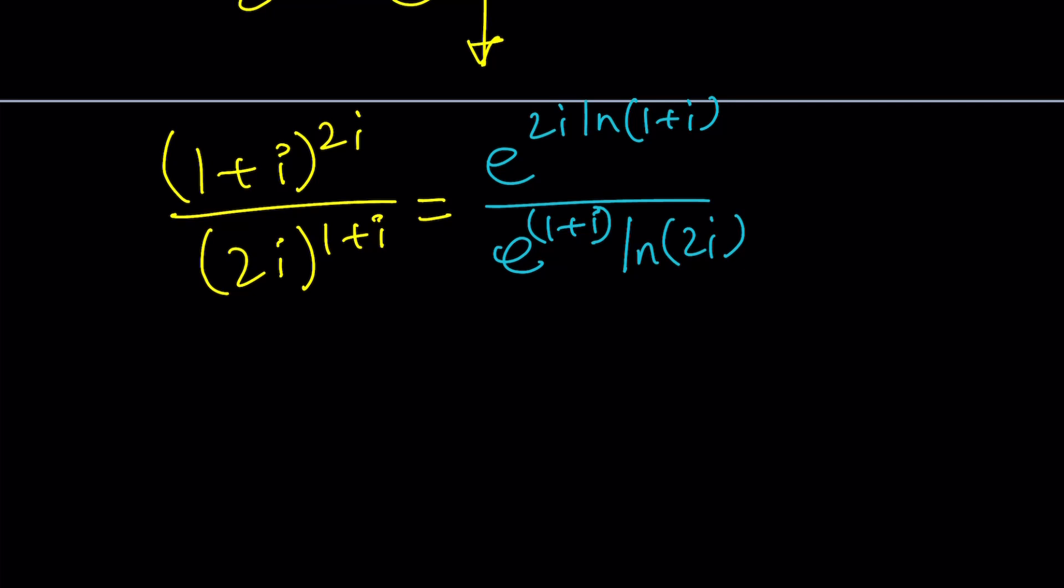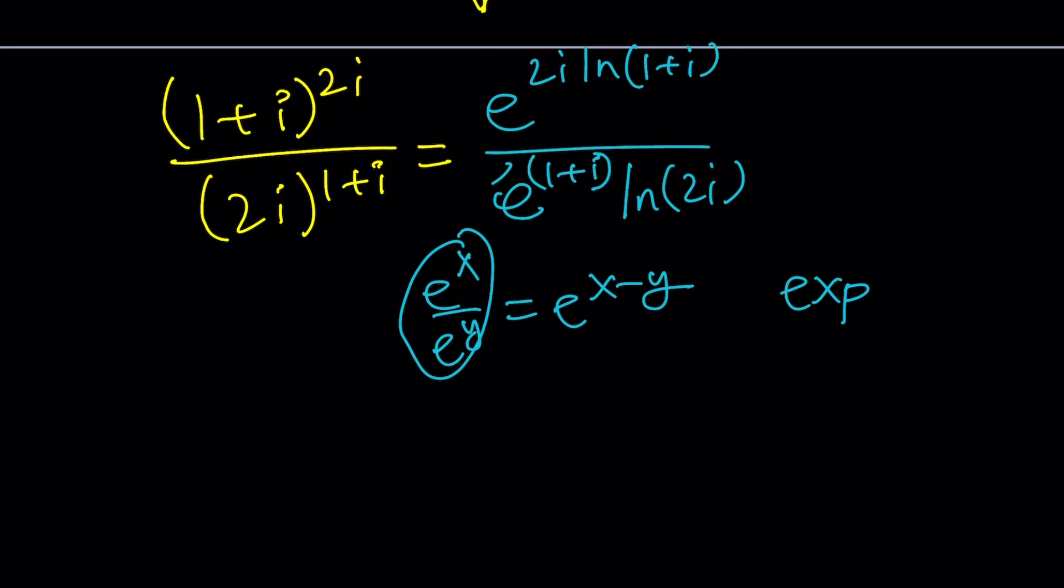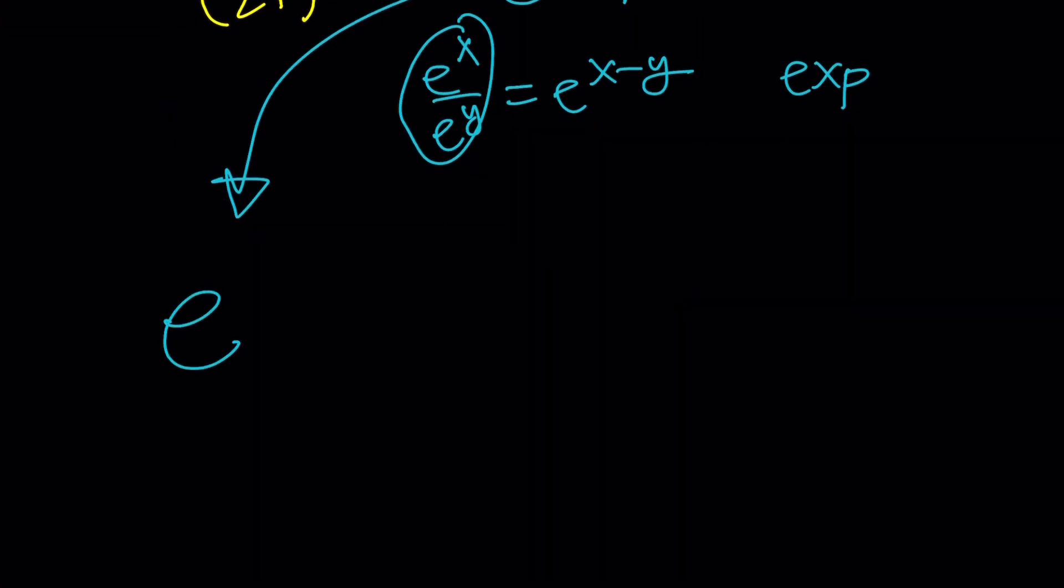Now, we are dividing two powers of e, right? So as you should know, exponential x divided by exponential y should be exponential x minus y. You could also write this as exp for exponential, but this notation is obviously shorter. So from here, by way of subtraction of exponents, we get e to the power 2i ln(1 plus i) minus (1 plus i) times ln 2i. I know that looks complicated,